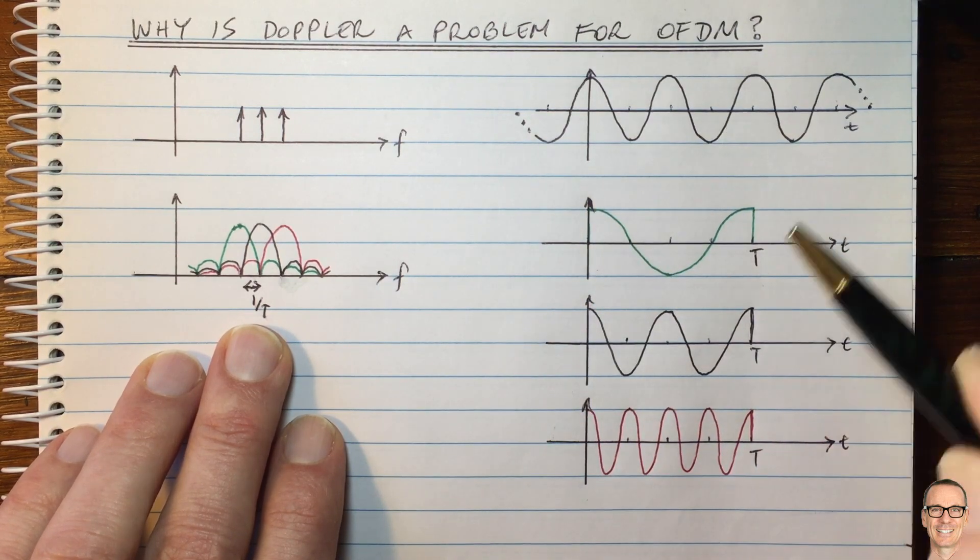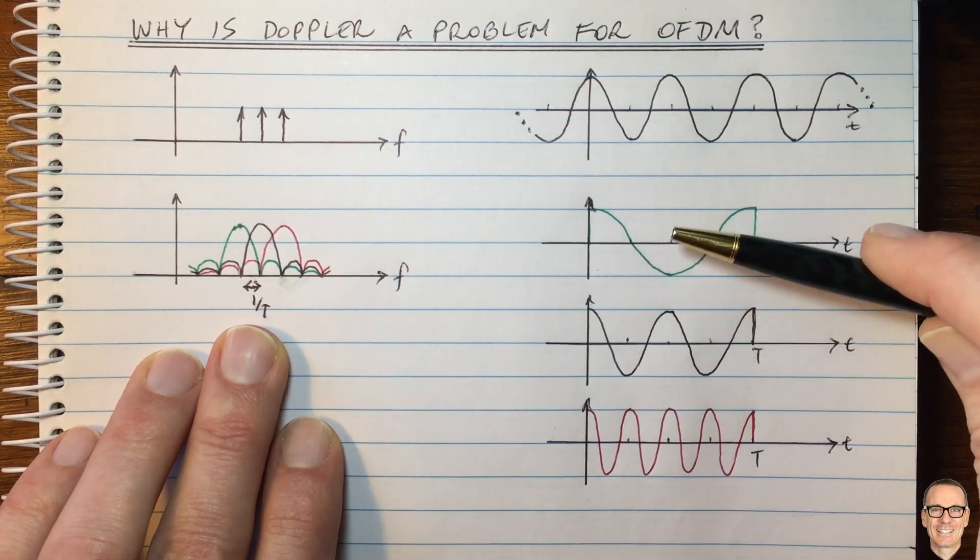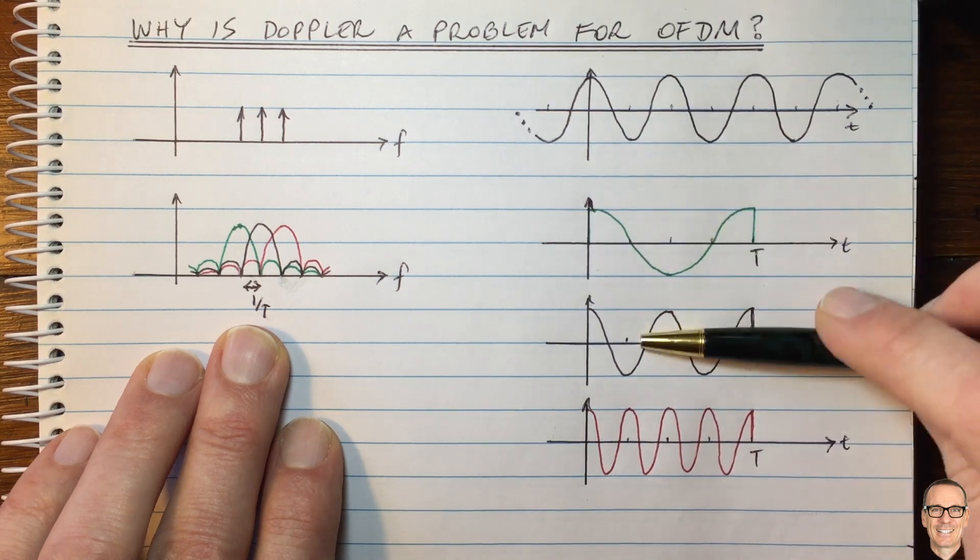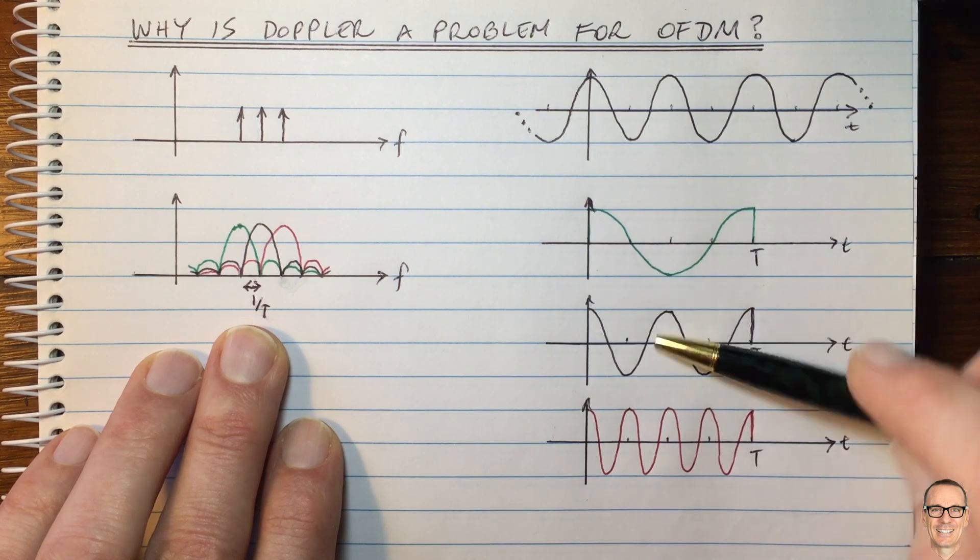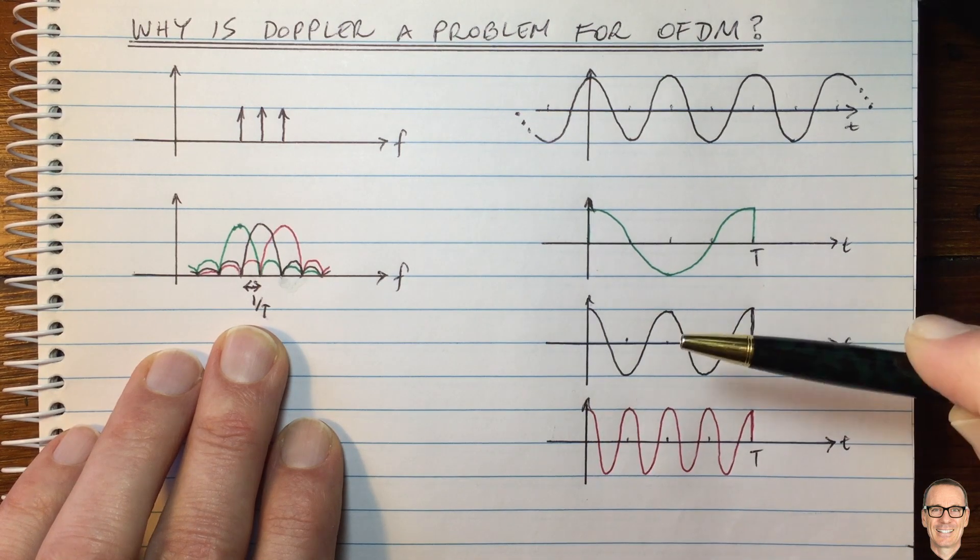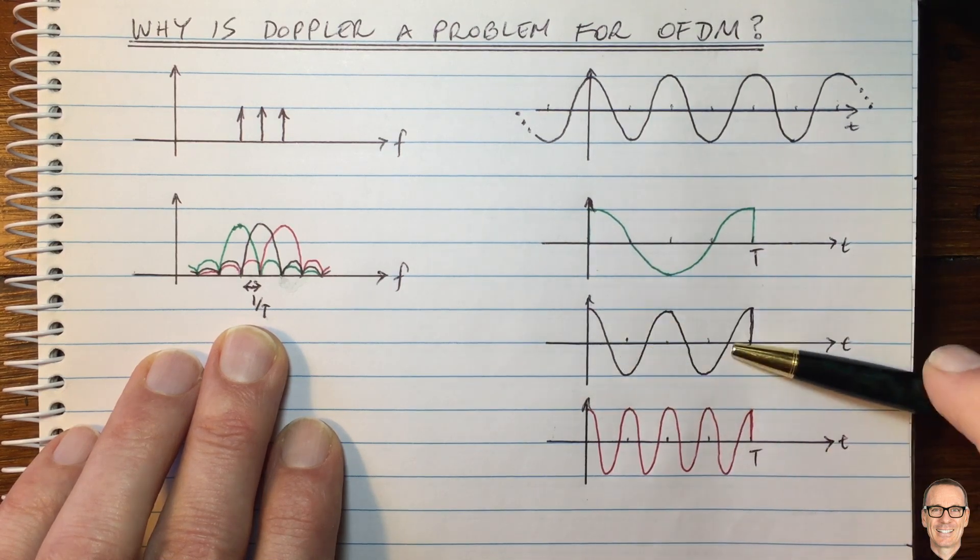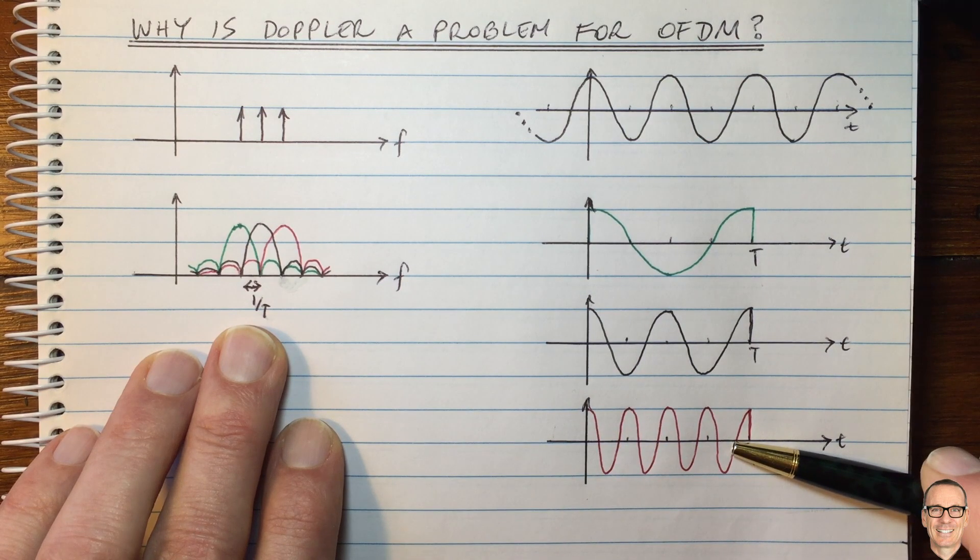These waveforms, which are one on T separated, you can see that the integral, if you multiply these two waveforms together, which is what happens in the matched filter, if you multiply them together and integrate over T, you will get zero. And so therefore, the output of the green matched filter will have no component from the black and also no component from the red, which is in the received signal.